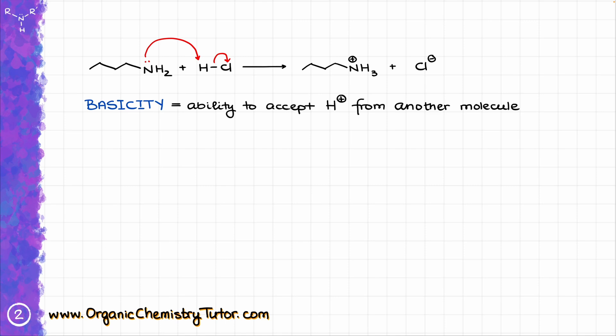The more basic the species is, the better it is going to be at grabbing the proton from something else. Just like in the case of acidity, we can express basicity with a number. For acids, we typically use pKa values, while for bases, we can use pKb values. And we remember the simple relationship that pKa plus pKb equals 14. However, this relationship between pKa and pKb values only applies to aqueous solutions.